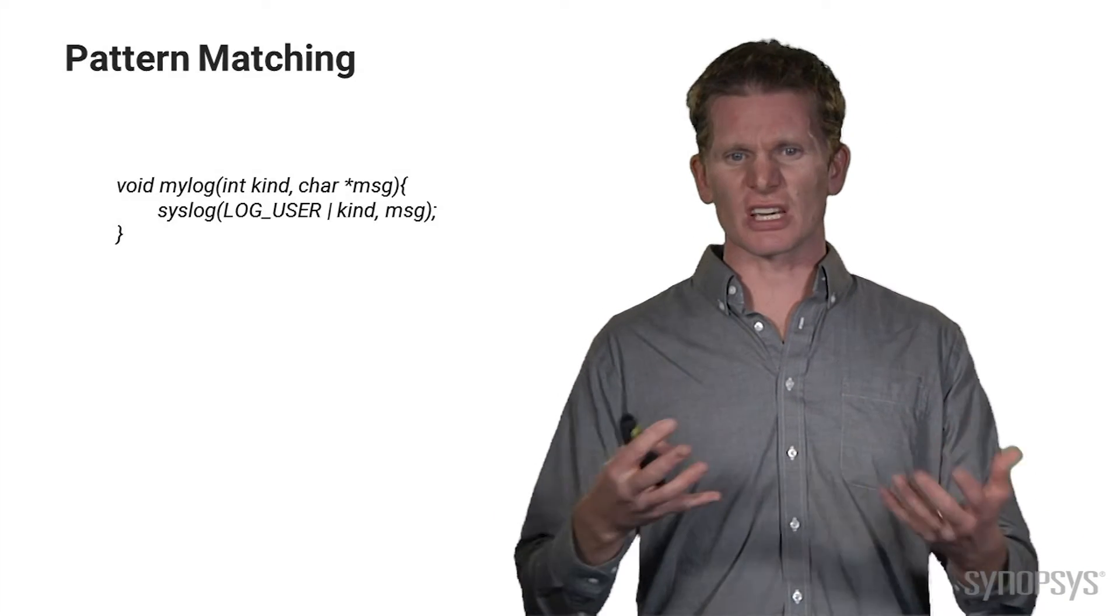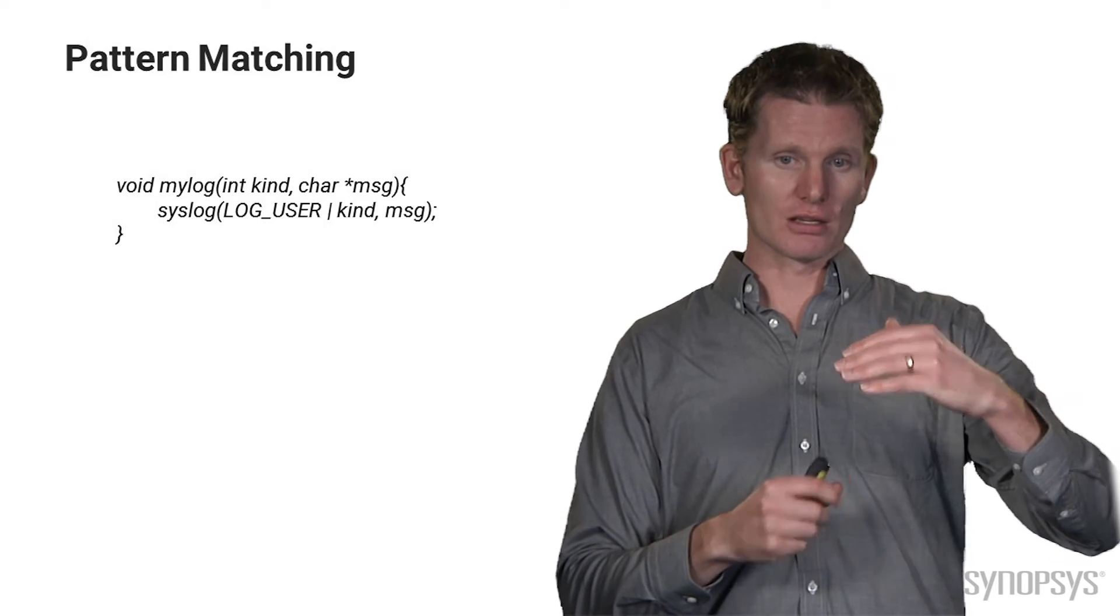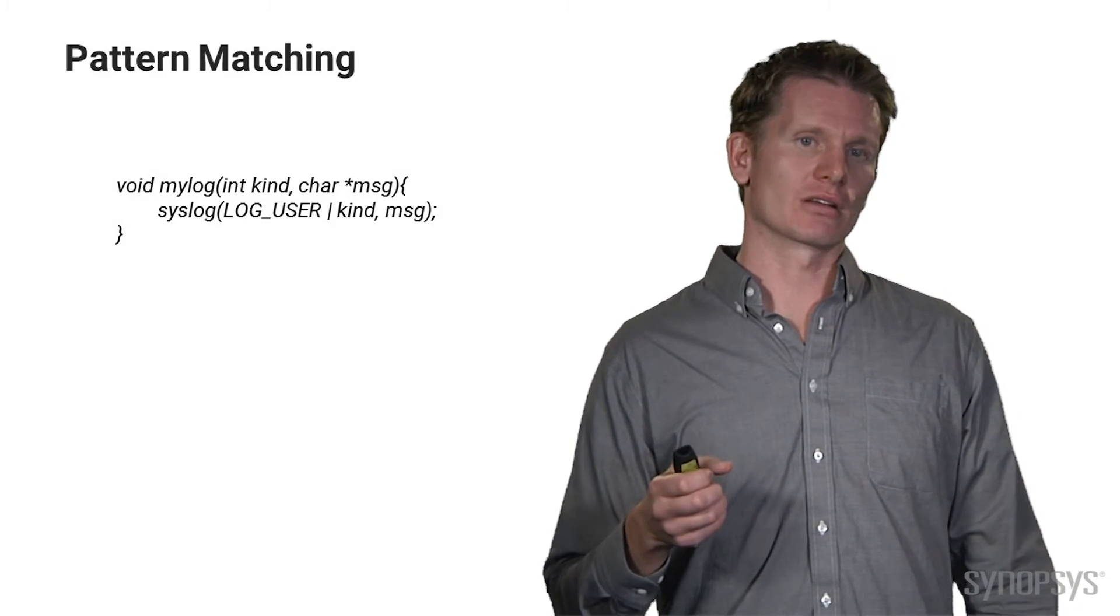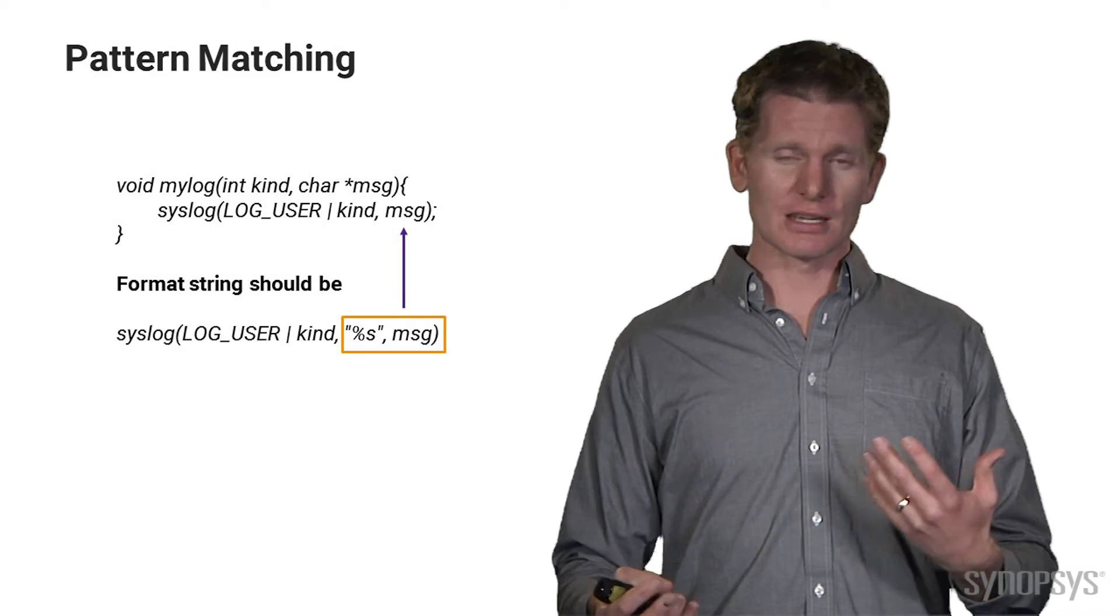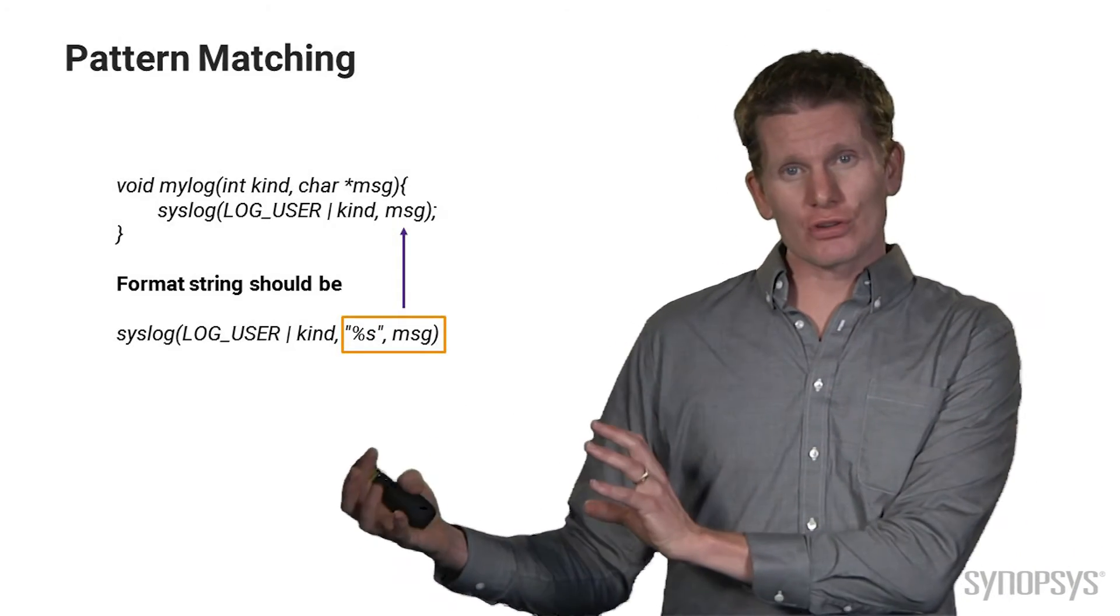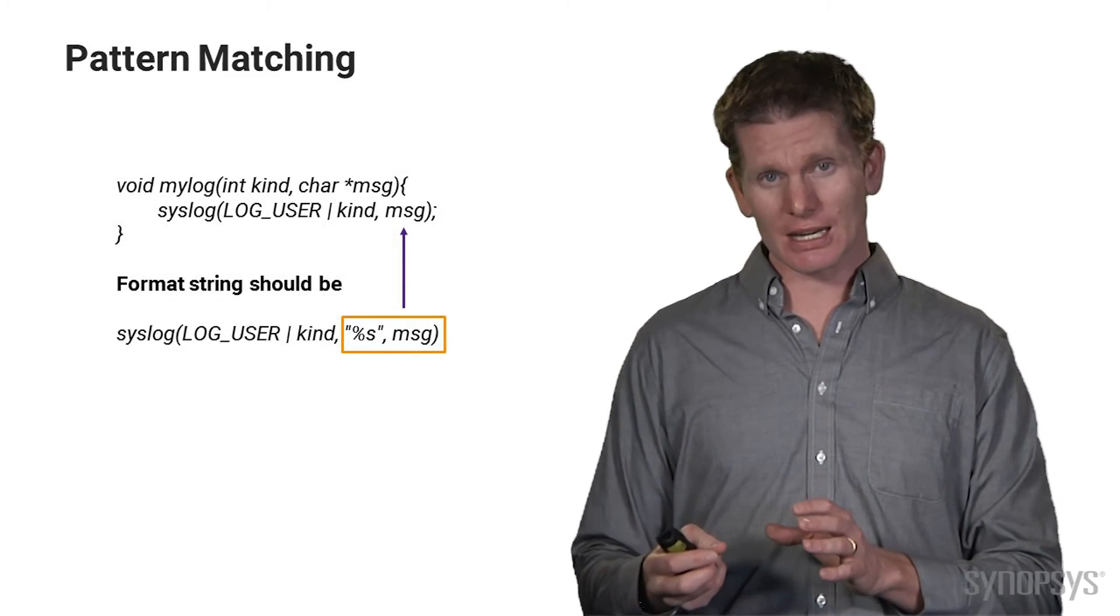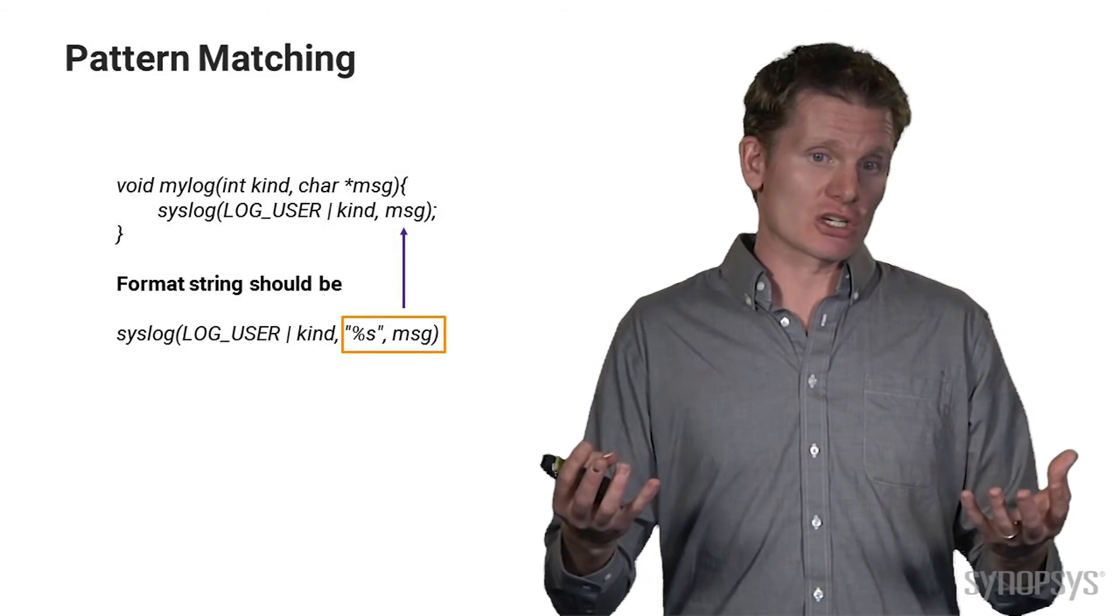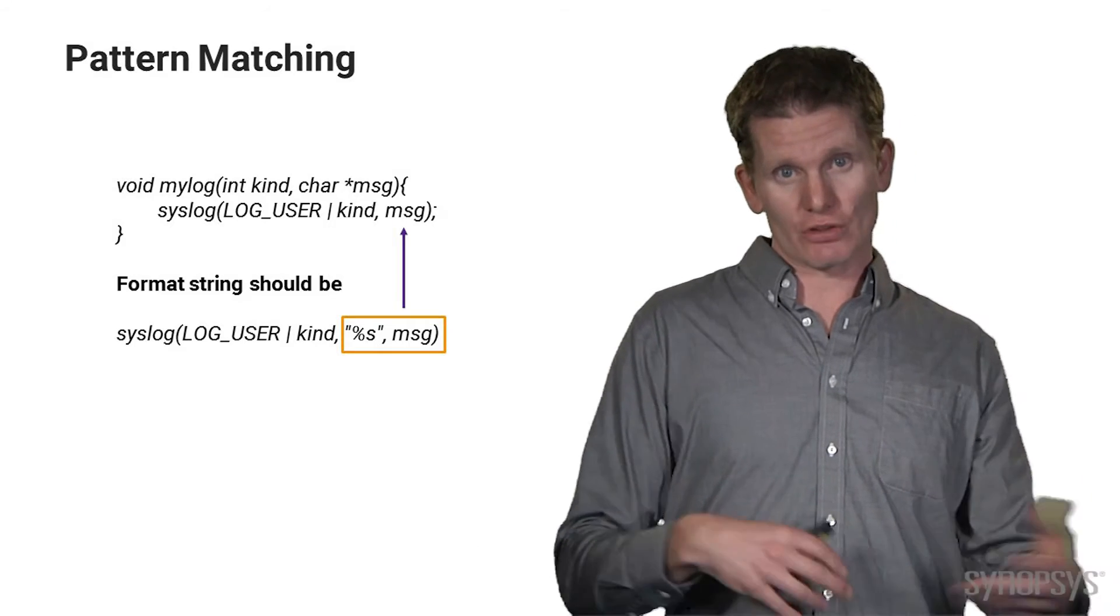If we look at a piece of code, and this looks like C code, we see there's a syslog function called from the mylog routine. And it looks like it's missing something. There's this %s. That's called the format string. That's something that tells the function how to format the user supplied data, the message in this case. And if that's missing, there's a vulnerability there. So it's a very simple pattern matching. You either provided the format string or you didn't. And if you didn't, there's a vulnerability.